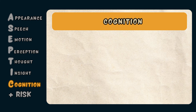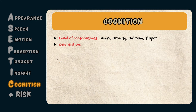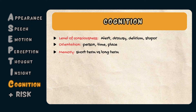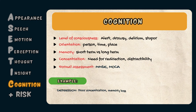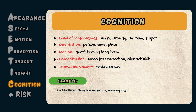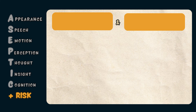The C in ASEPTIC stands for Cognition. This includes an assessment of the patient's level of consciousness — for example, are they alert, drowsy, delirious, or in a stupor? It also assesses orientation to person, time, and place; memory, such as short-term versus long-term; and ability to concentrate. When assessing cognition, it may be helpful to use a validated formal tool such as the Mini Mental State Examination (MMSE) or the Montreal Cognitive Assessment (MoCA). For example, a patient with depression may have difficulty concentrating and demonstrate signs of memory loss.